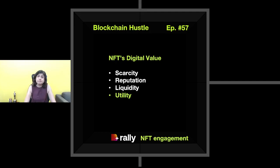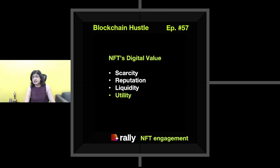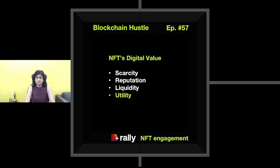NFTs are priced for their digital value. But what does this digital value comprise of? It can comprise things like NFT scarcity, reputation, utility, and liquidity — there can be many more, but in my mind these are the dominant ones. Generally speaking, if you look at the NFT marketplace right now, NFT arts and collectibles are the ones getting the most buzz, and these are anchoring on NFT scarcity — that is, one of a kind — or the reputation of the creator's profile. These are usually transactional exchanges.